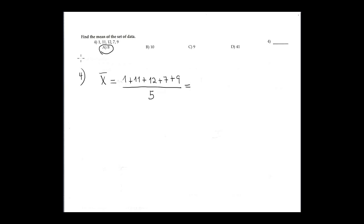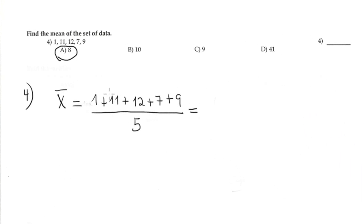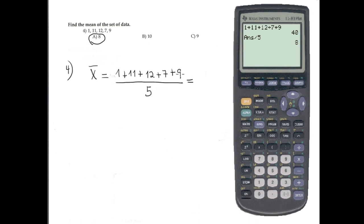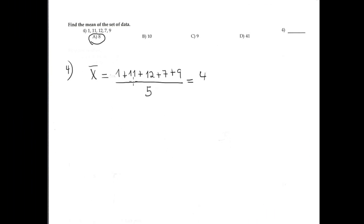Find the mean of the data — it's super easy. Just add 1 plus 11 plus 12 plus 7 plus 9 divided by 5, because we have five elements in the list. Using the calculator: 1 + 11 + 12 + 7 + 9 = 40, divided by 5 is 8. The answer is 8.